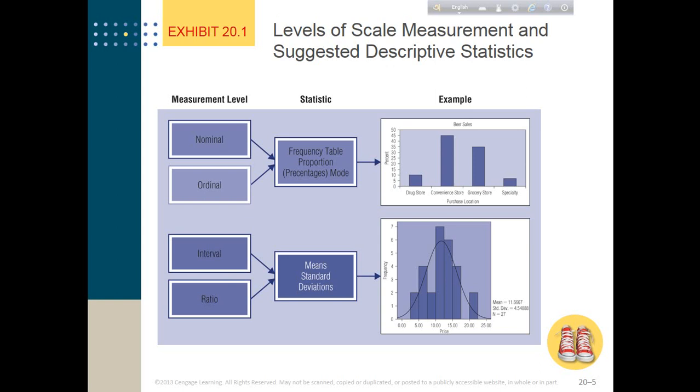However, for interval and ratio scale, we can use mean and standard deviation. For the same survey, the beer sale survey, customers were asked what is the price they pay for each bottle of beer. This is the histogram, and you can see that mean is 11.67. So on average, customers pay 11.67 dollars for each bottle of beer. Price, you understand, is a ratio scale variable. That's why we can use mean and standard deviation.